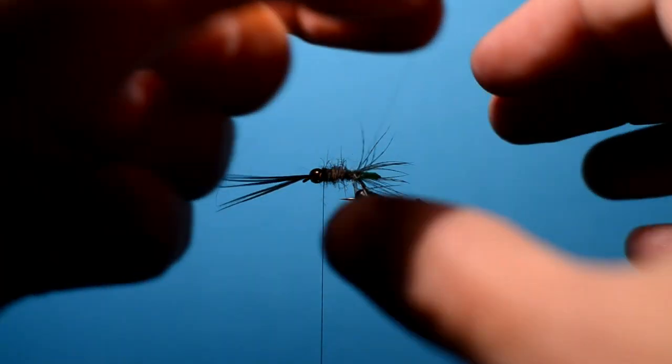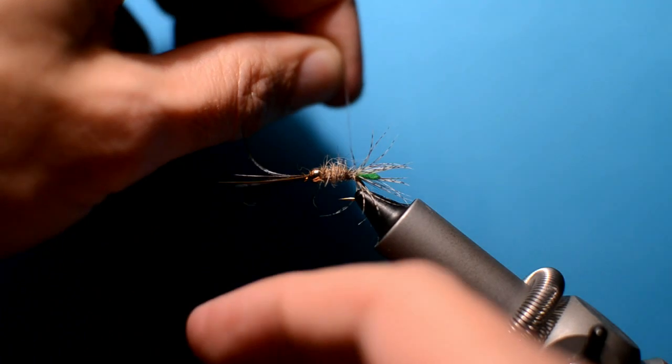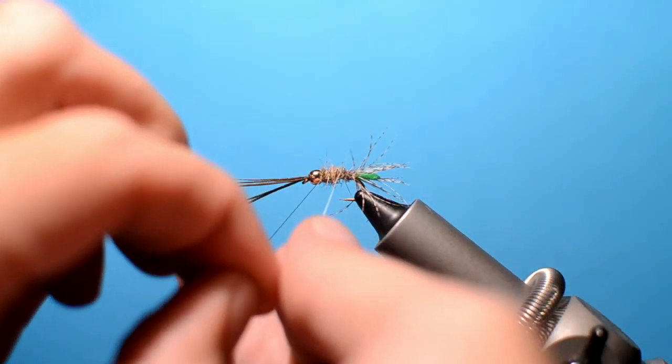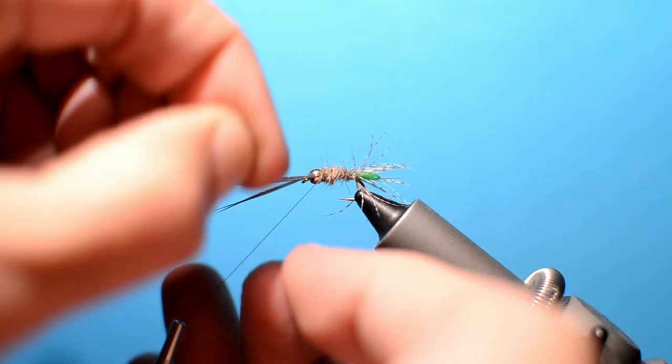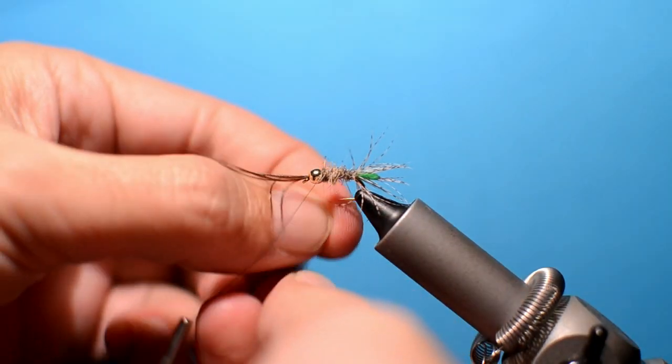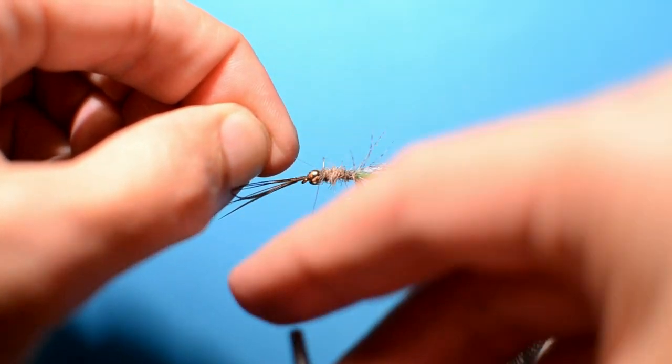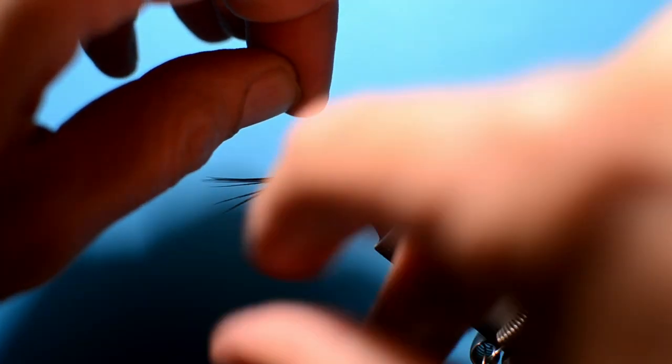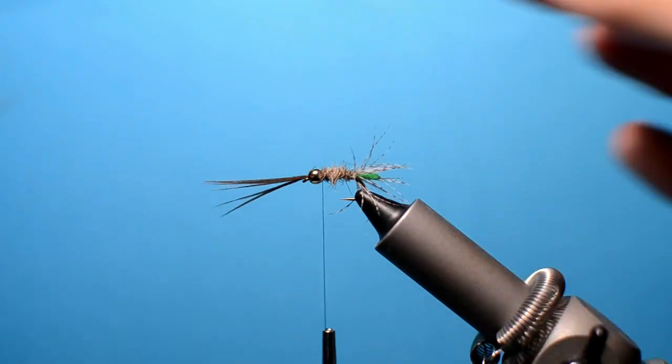Now we want to take the rib and in the opposite direction bring the rib through. Put it down. Tight turns all the way up to the bead. Once you get to the top, couple of turns over with the thread should lock that off. And just trim away.